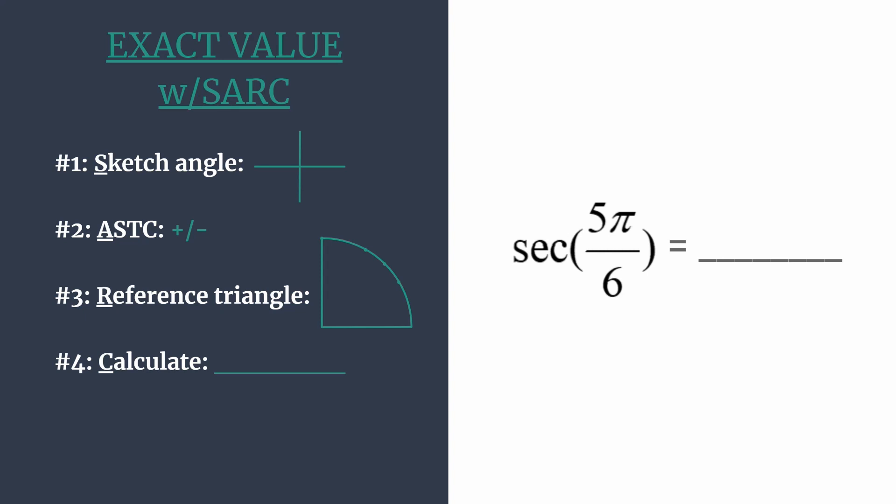As we start to sketch this, I like to work my way around counterclockwise. Here's zero. Here's π. Sometimes it's helpful to rewrite π so that it has a common denominator with your angle. So rewrite it as 6π over 6. And then I think it's really easy to see that 5π over 6 would be just a little less rotation than that. So its terminal side would fall about here in the second quadrant.